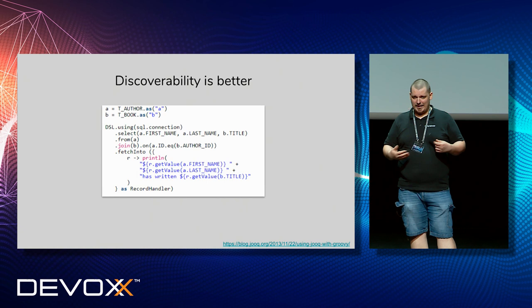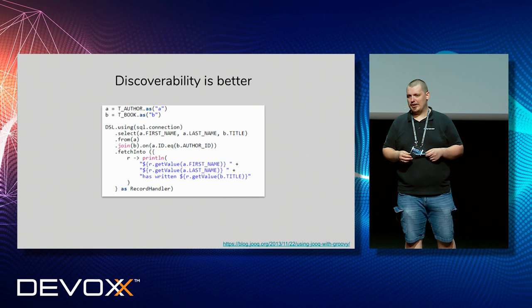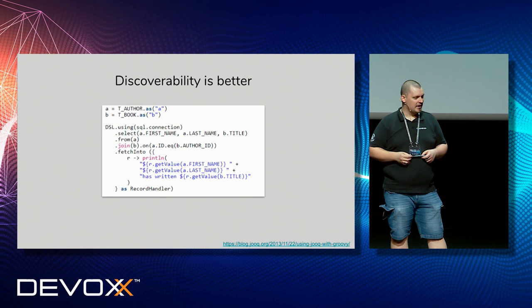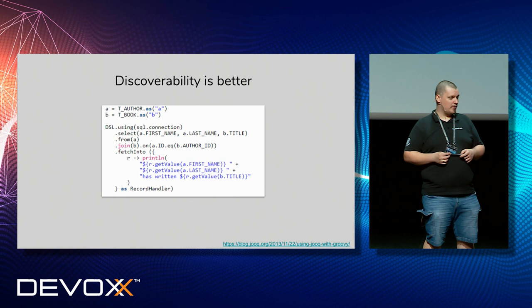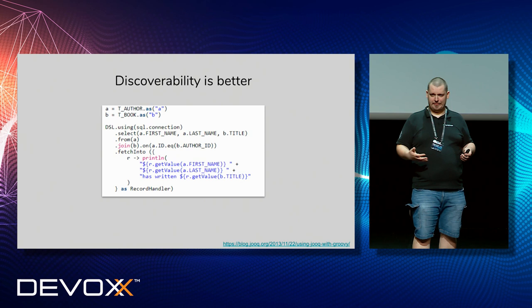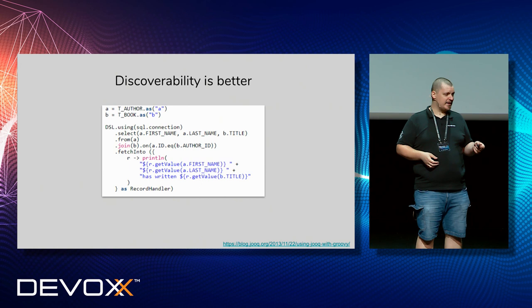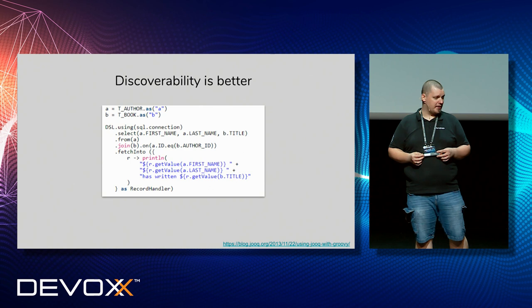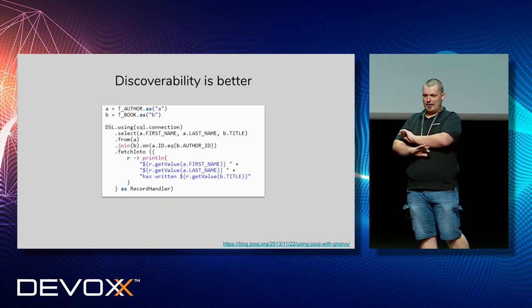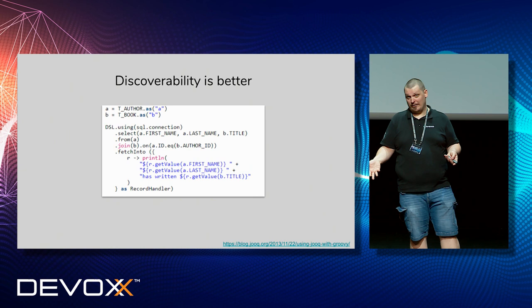What we can do instead of having this documentation? Well, these are basically the principles of clean code. I think everybody here knows clean code. One thing that really helps when trying to understand code is discoverability, also called fluent APIs. You have an example here for the library called JOOQ, created by Lukas Eder. It says: if you know SQL, you will understand what happens here. You don't need a single shred of documentation to understand what is happening here, if you know SQL.